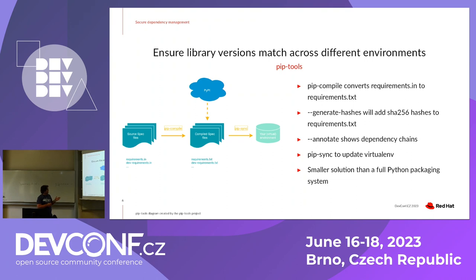A really nifty thing about pip-compile is that you can pass a --generate-hashes flag and it will compute SHA-256 checksums. Later, when you run pip install, it's actually checking hashes as it downloads packages. The --annotate flag is also very useful on a shared project — it shows you how you ended up with a dependency in the first place, since packages like requests can pull in other packages with deeper dependency chains.